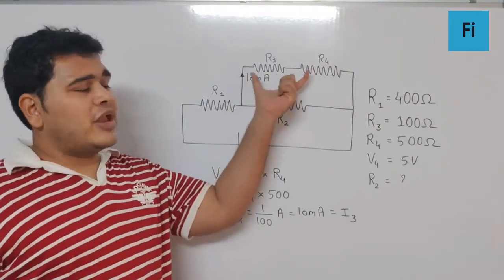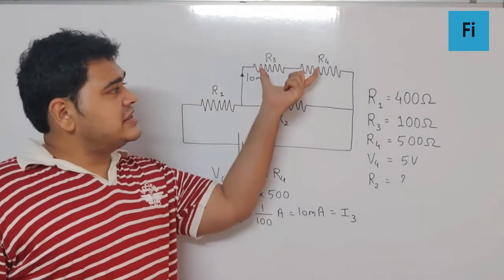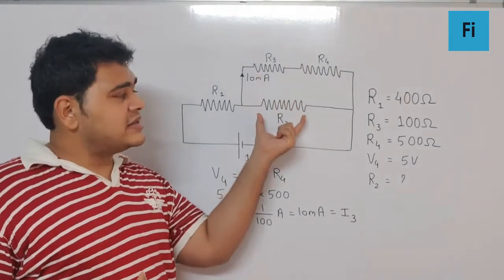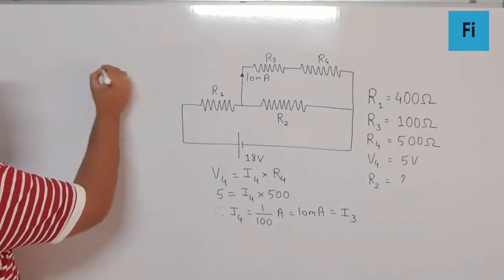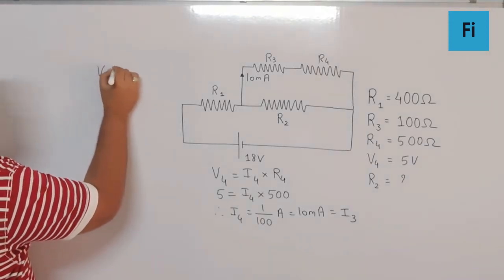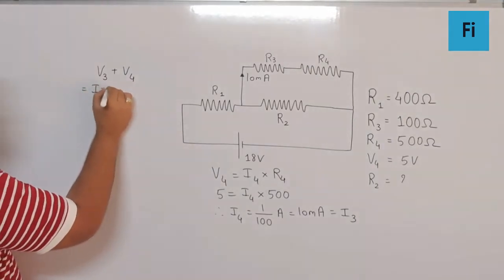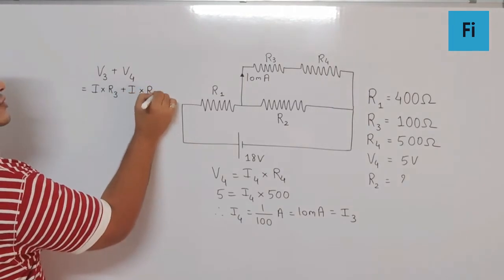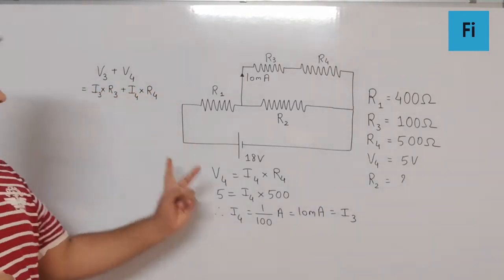So can I say, we can find the potential difference across both the resistances. V3 plus V4 will give us the voltage across R2. So can I have V3 plus V4 as I into R3 plus I into R4? If you notice, I can write this as I3 and I4, but they both are equal.